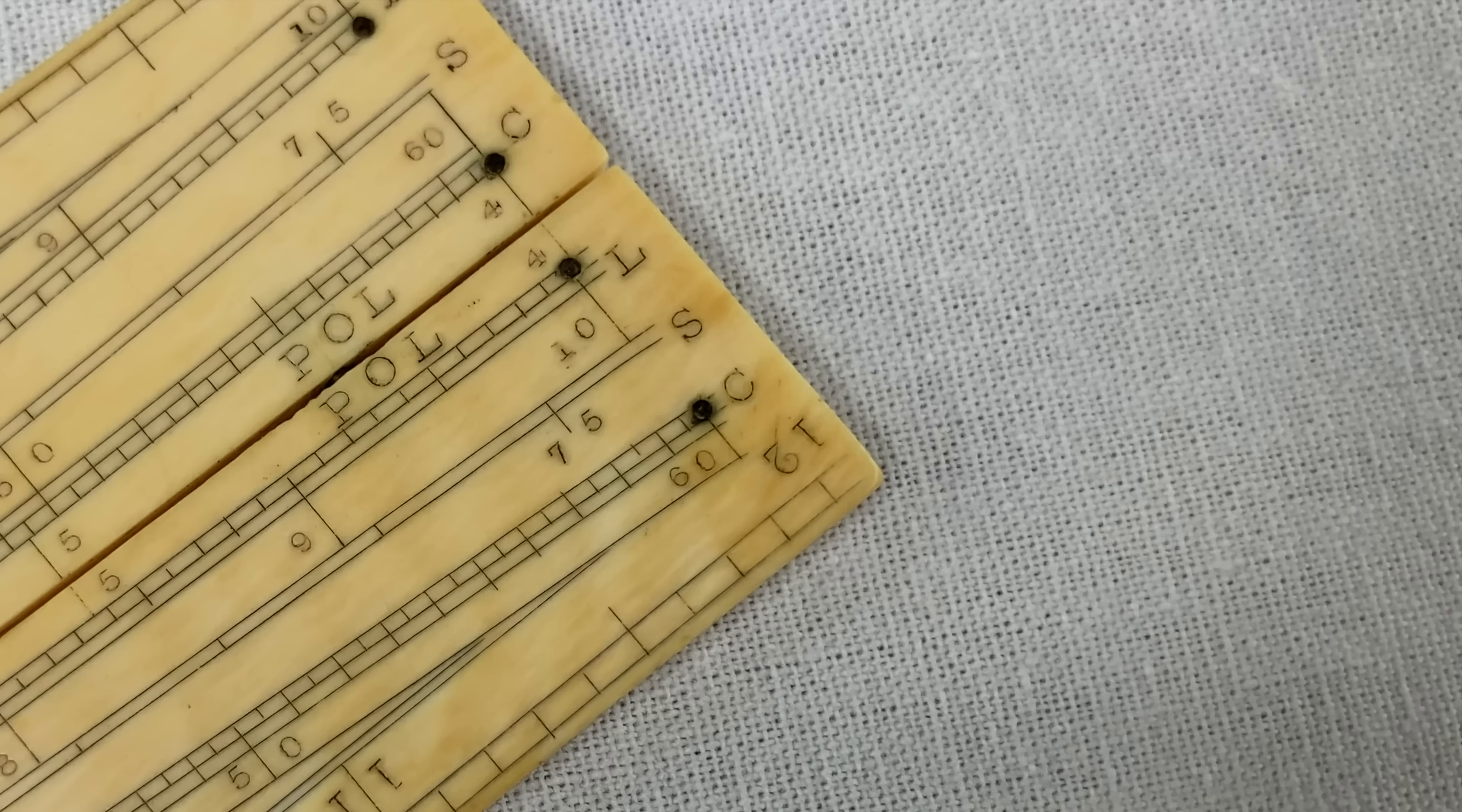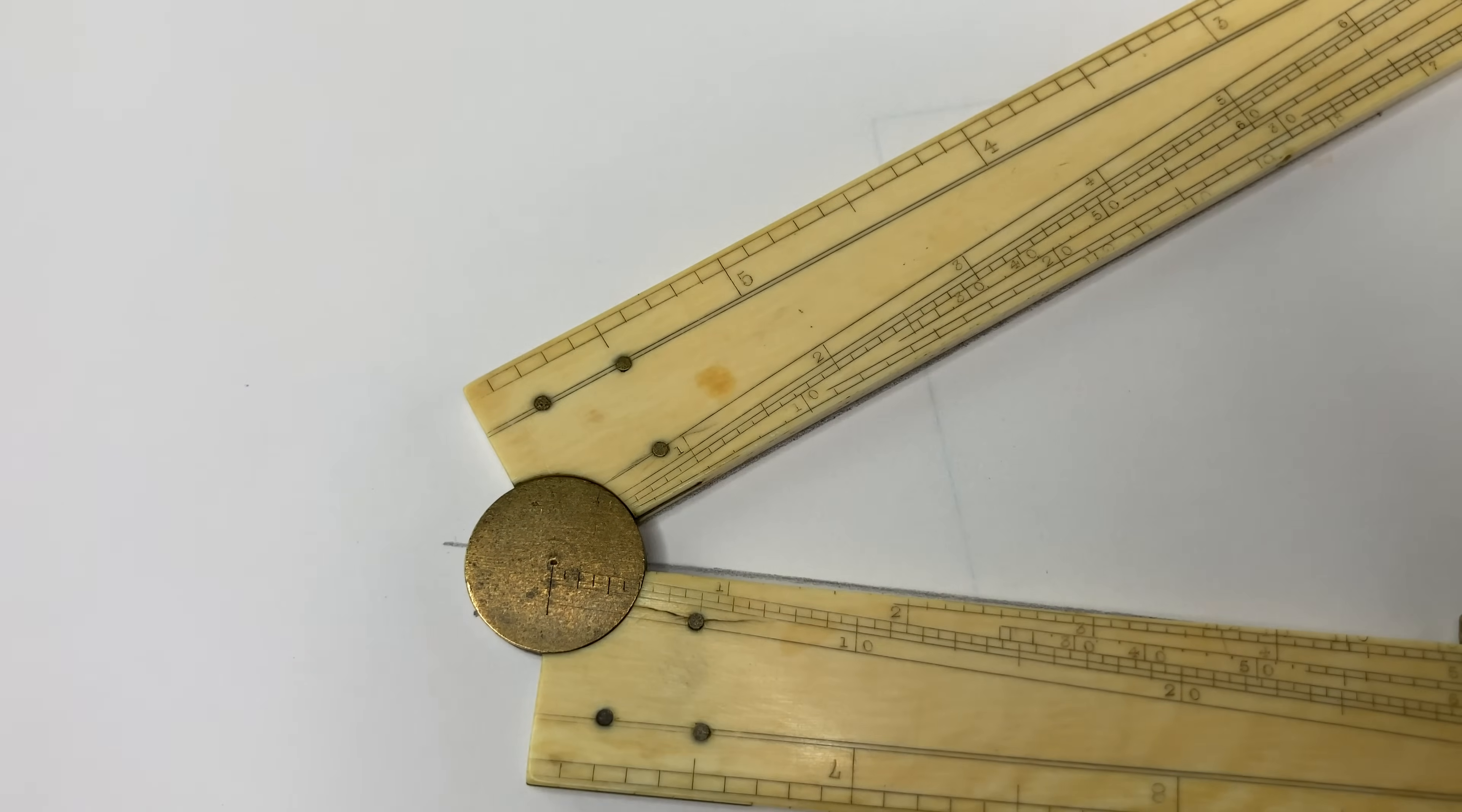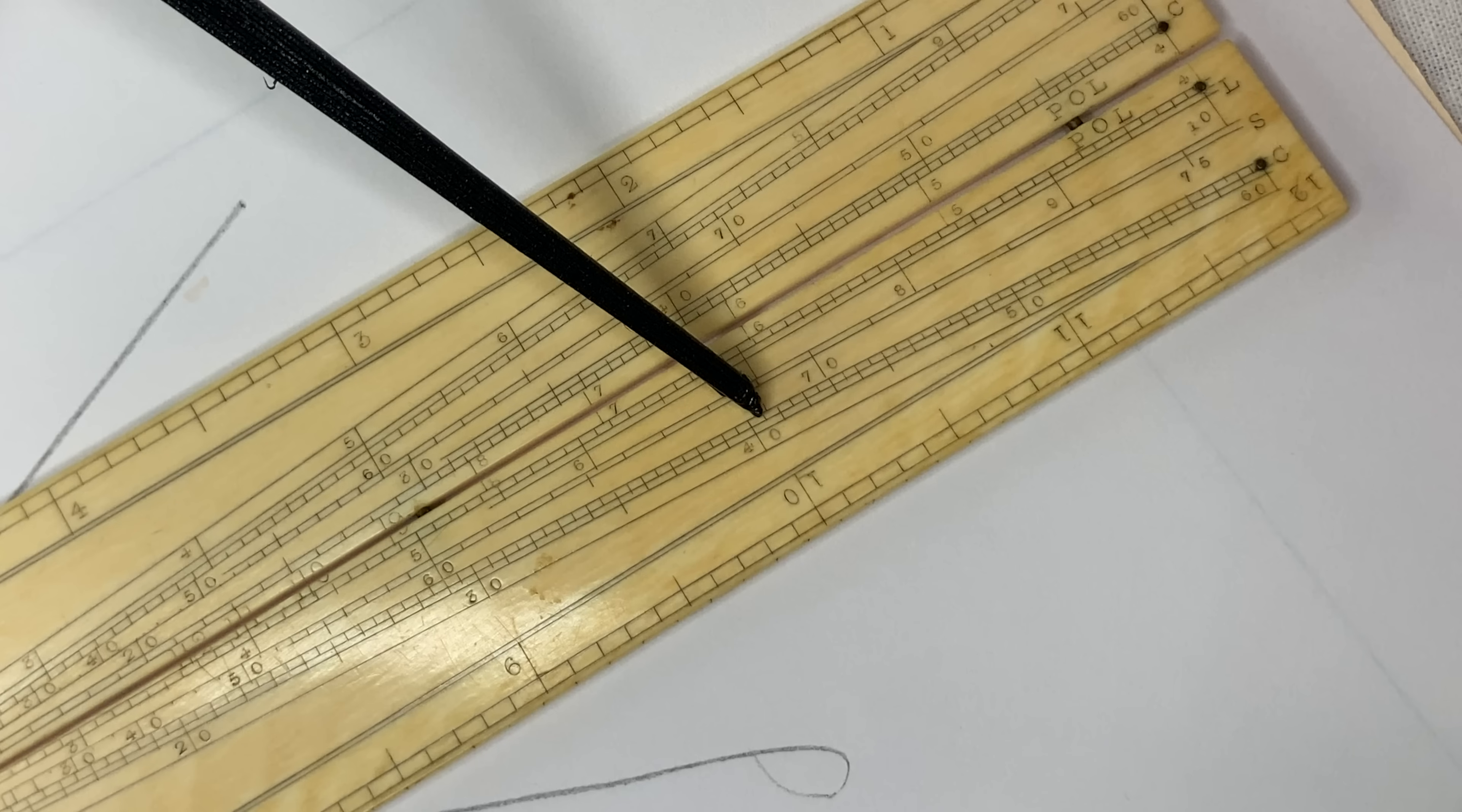The C scale is called the Line of Chords. This goes from zero to 60, and it's used for working with angles. You can use the sector like a protractor to measure an angle. You open the sector to your angle, stretch across at the end, and then the C scale tells you that angle. About 40 and a half degrees. All right.